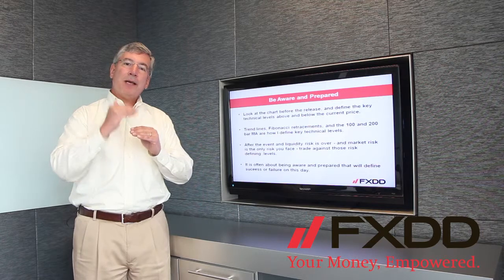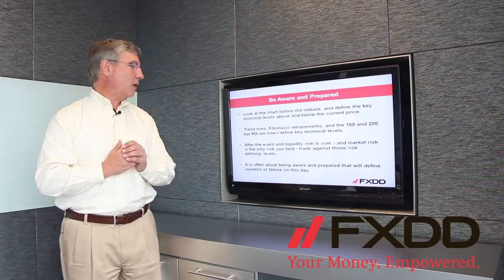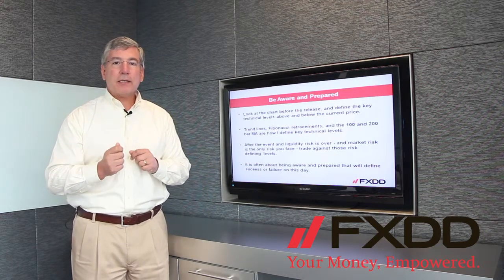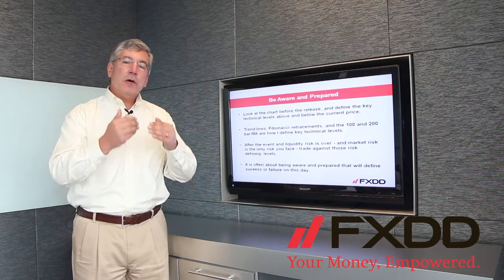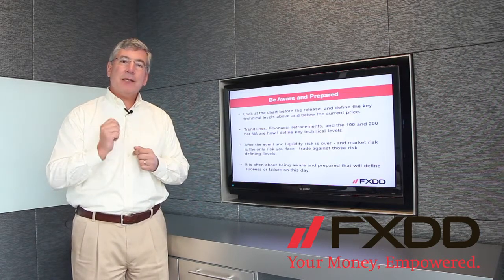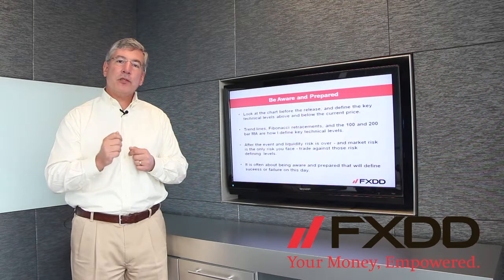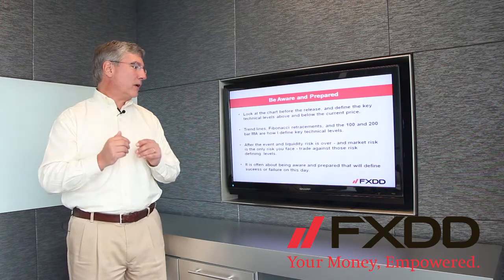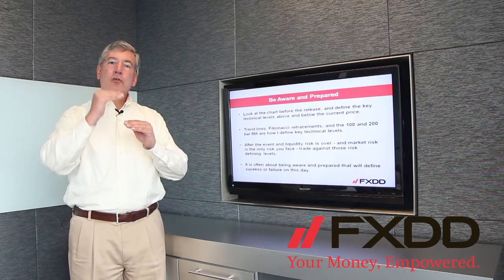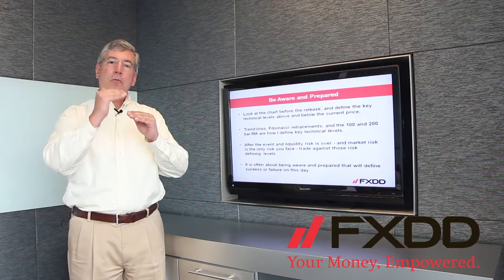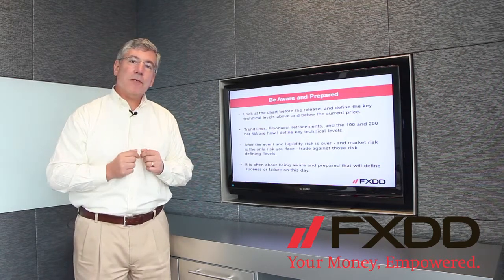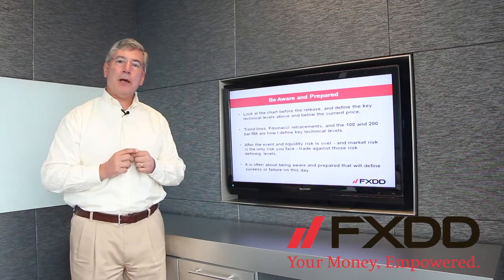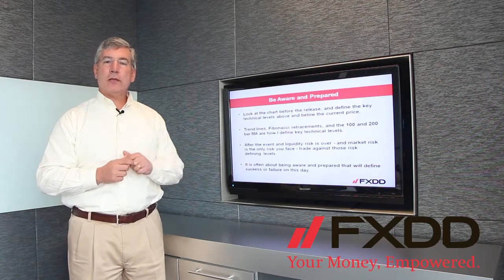That's how I define my key technical levels above and below. Then, after the event risk, after the liquidity risk off of the number, what you're left with is market risk — the kind of risk that we take every day when we trade, every day when there's not a key economic release. With that market risk and with your technical levels, you'll be able to trade depending upon whether the number is bullish or bearish, using those levels to define and limit your risk. So be aware and prepared: define your risk, limit your risk, and you'll trade the number better.